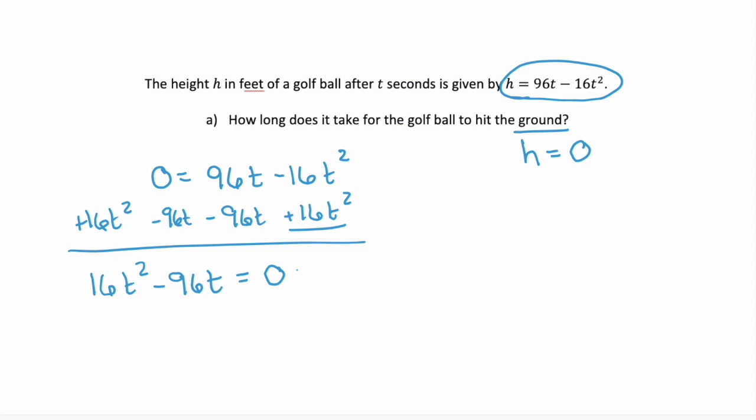Now first step is our GCF. 16t is the GCF here, and that leaves behind a binomial of t minus 6, and that is equal to 0. Now that it's factored, we use the zero product property.